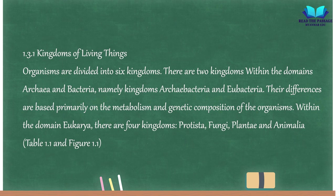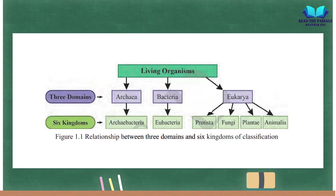1.3.1 Kingdoms of Living Things. Organisms are divided into six kingdoms. There are two kingdoms within the domains Archaea and Bacteria: Archaebacteria and Eubacteria. Their differences are based primarily on metabolism and genetic composition. Within the domain Eukarya, there are four kingdoms: Protista, Fungi, Plantae, and Animalia.